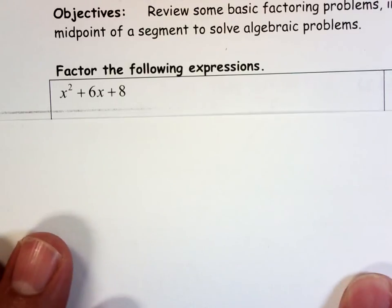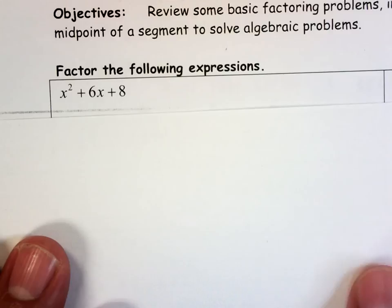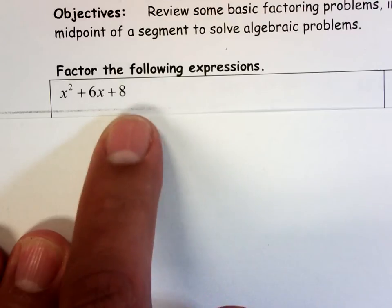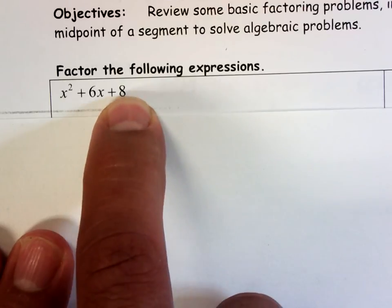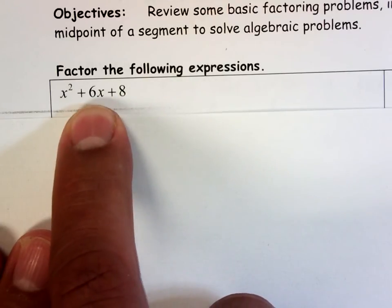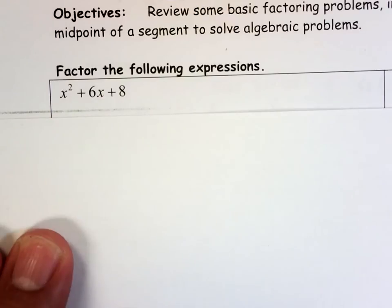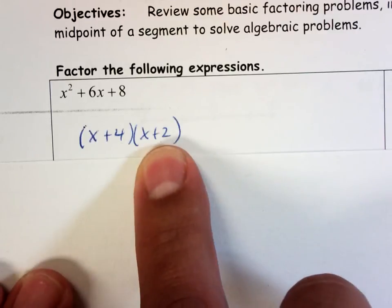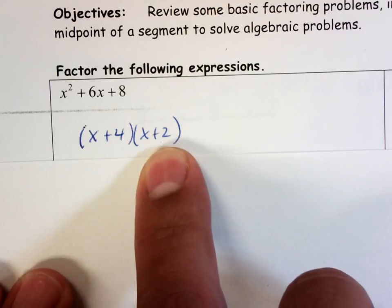Start here. I've got x² + 6x + 8. When I do this, I'm always trying to find two numbers that multiply together to give me this number, the third one, and when I add up those same two numbers, they give me this number. What two numbers multiply to give me 8 and also add up to give me 6? That would be 4 and 2. So when I factor it, there's my 4 and there's my 2. So it's (x + 4)(x + 2).